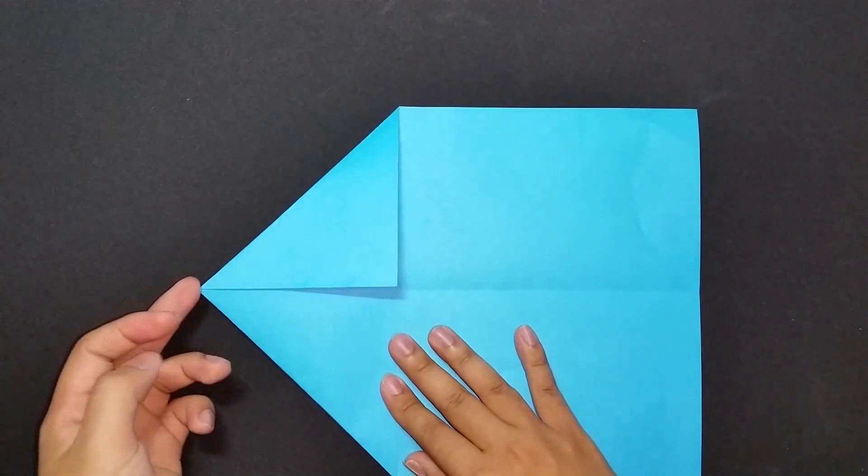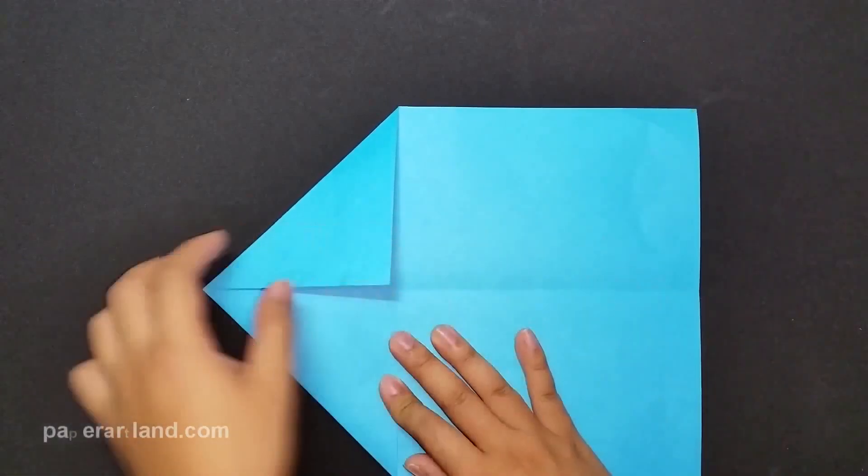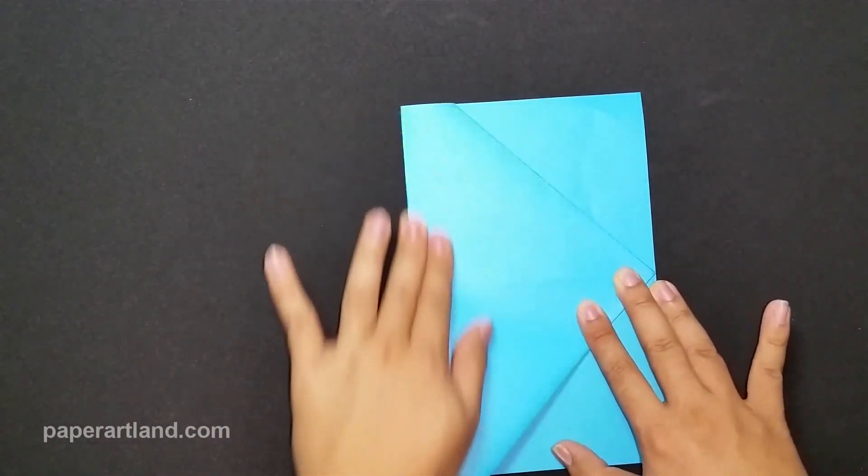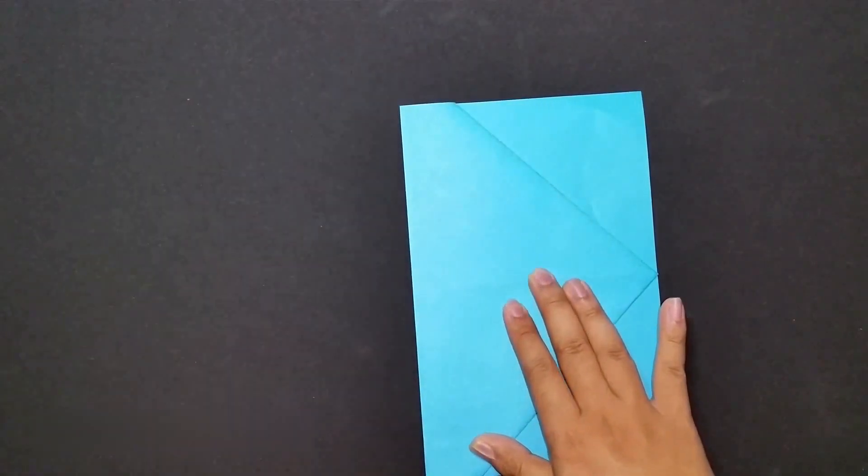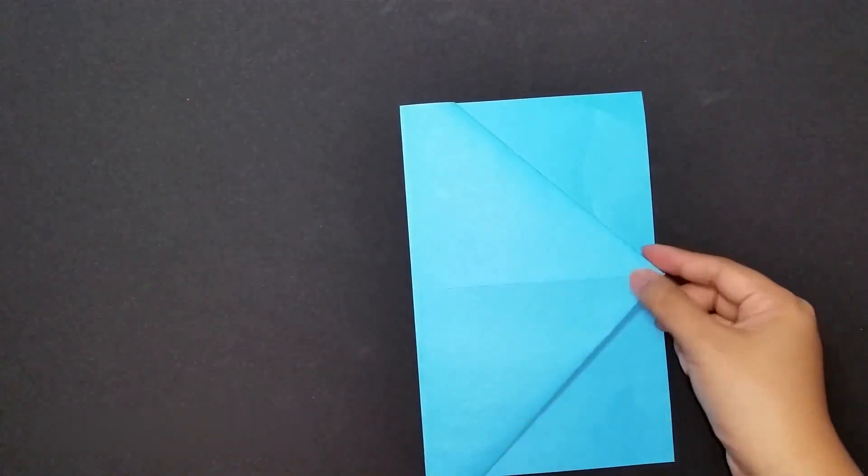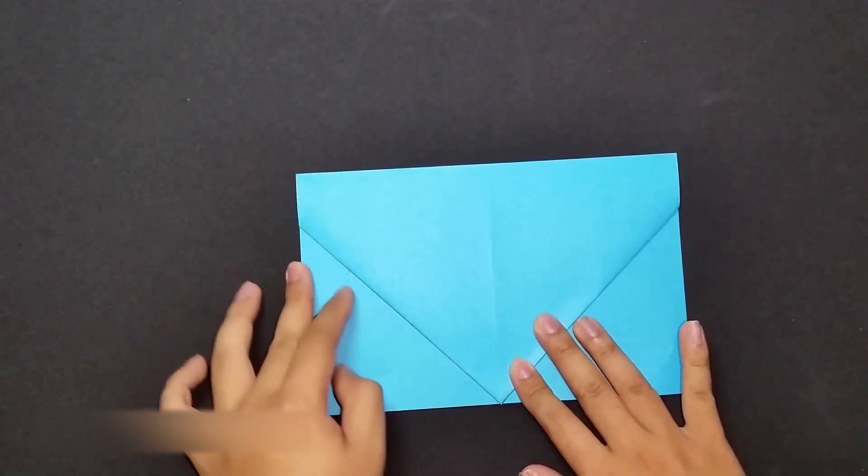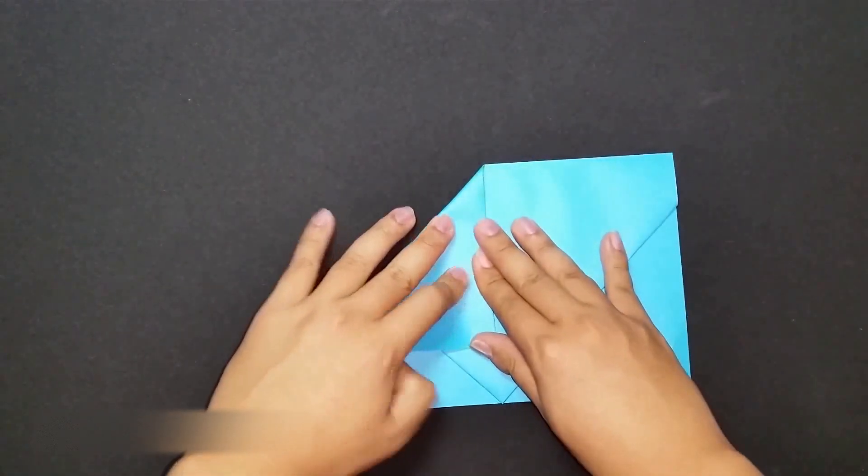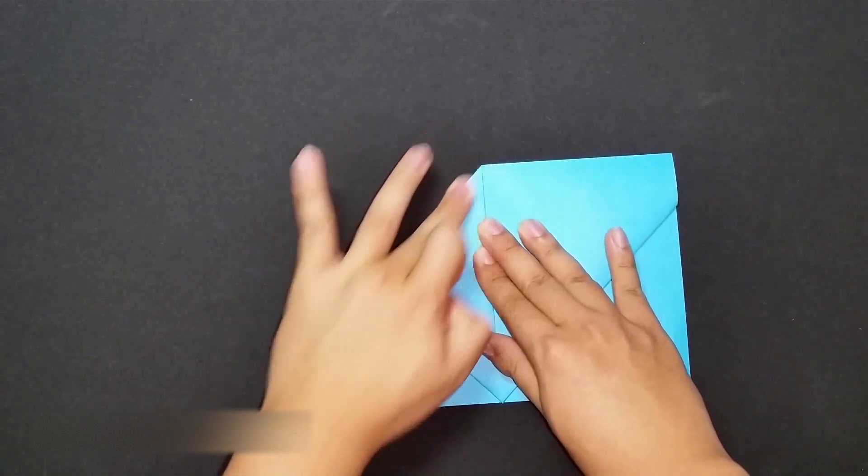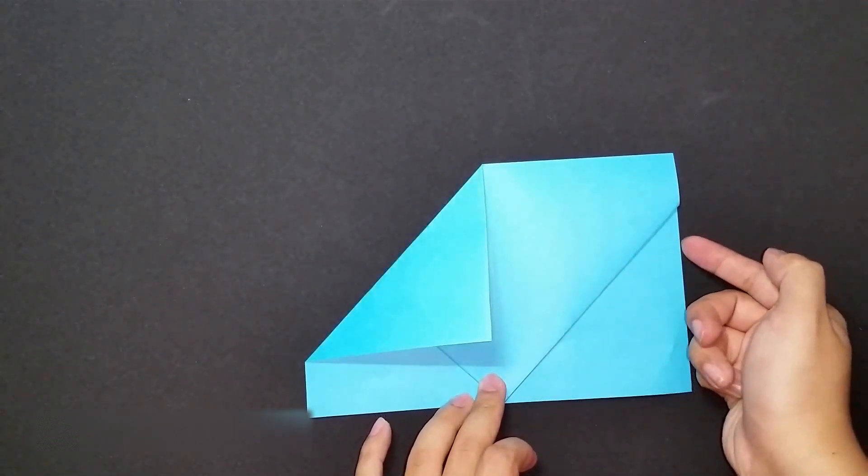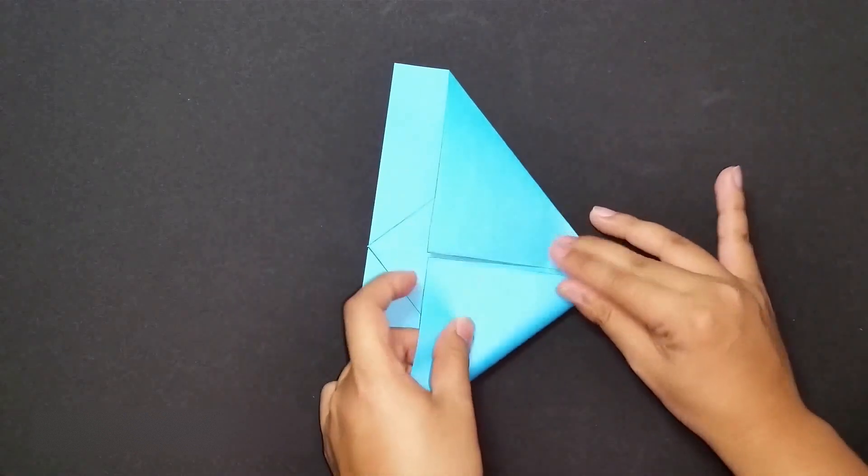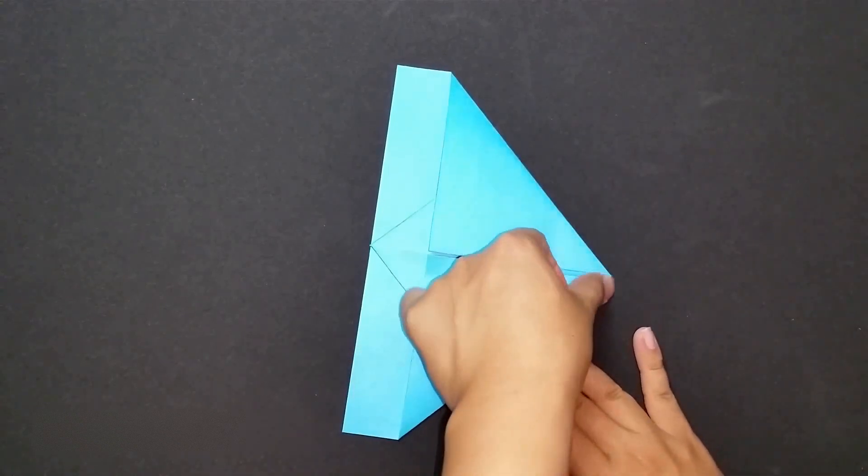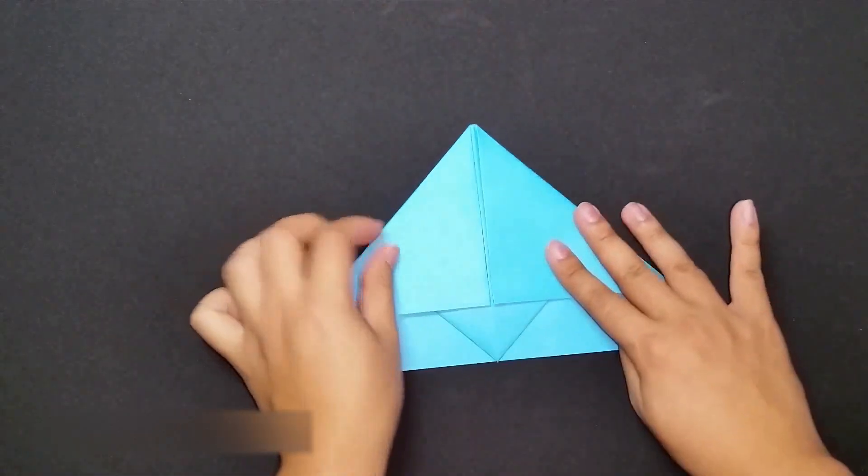Next step, I will start from the tip here. Fold it to this edge. Very simple. Now, turn the paper this way. Start from this side, I will fold it to the center crease. Now, repeat the same step for this side. I will fold it to the center crease. Turn the paper back like this.